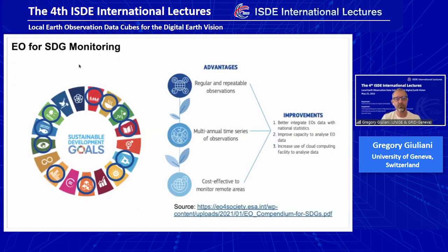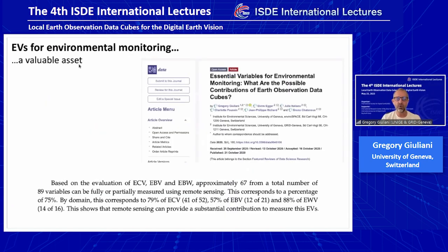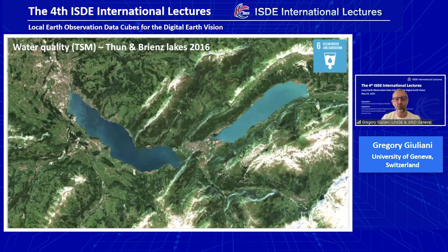Obviously, as you know, Earth observation data can be really useful for monitoring the SDGs, and also in terms of generating essential variables for climate, biodiversity, water, and so on — the data cube technology can be a really valuable asset. We tried to look at the current ECVs, essential biodiversity variables, and essential water variables, so that we can assess the potential contribution of that technology to generate these essential variables. Quick examples now of one application: water quality.